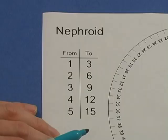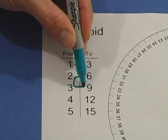To make a nephroid, connect every slit with the slit number three times as big.